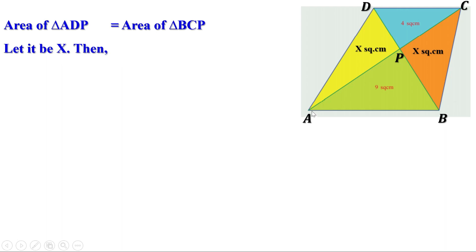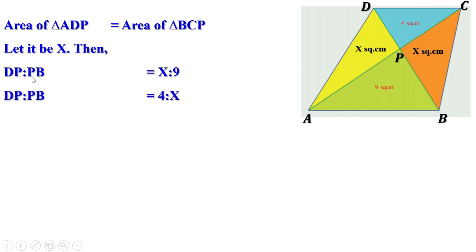Look at triangle ABD. The line AP from vertex A divides side BD and the area in the same ratio, so DP to PB = X to 9. Now look at triangle BCD. The line CP from vertex C divides DB in the same ratio, so DP to PB = 4 to X. Since both expressions equal DP to PB, we have X to 9 = 4 to X.